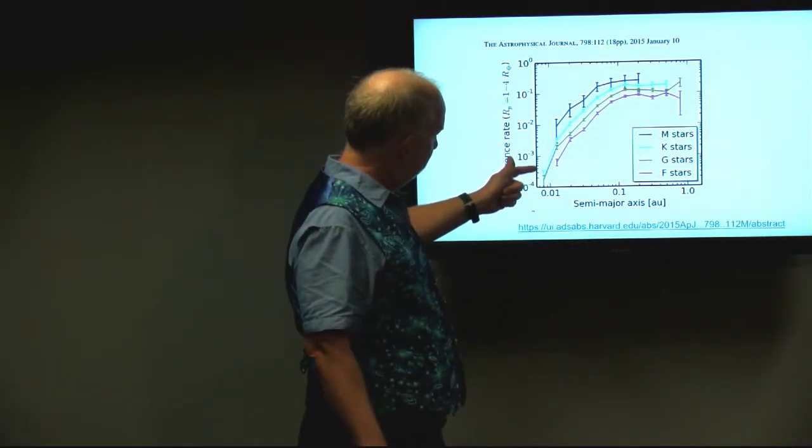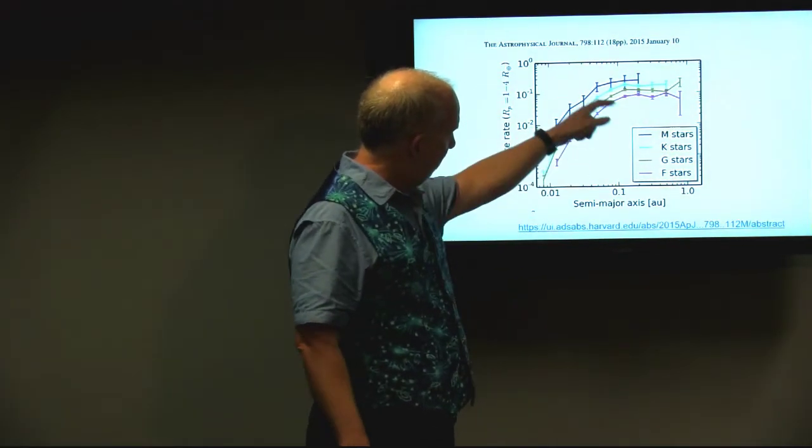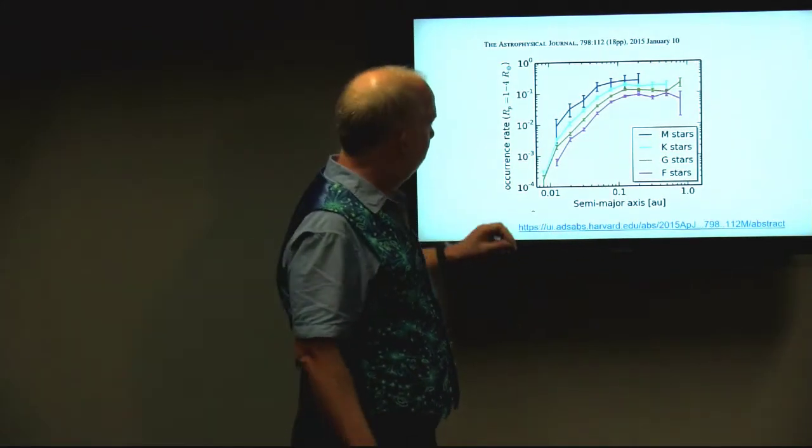Now what you can see is that they're less common close in, more common further out, but it flattens out beyond about 0.1 astronomical units, which is still pretty close in.